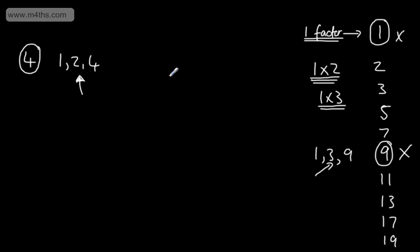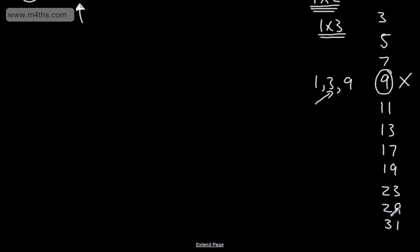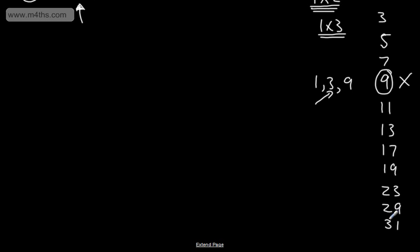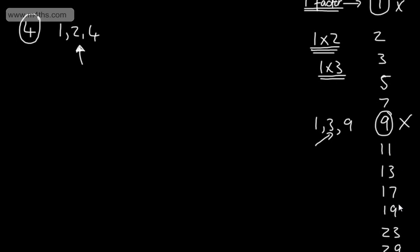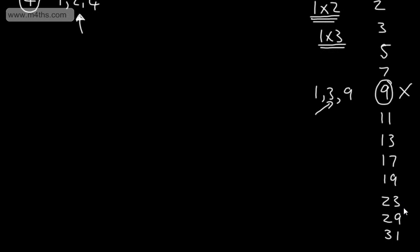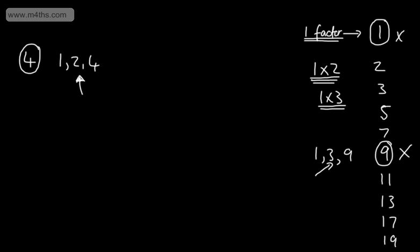So for your basic maths, just learn the first few prime numbers. I would suggest that any problem won't extend beyond about 31. Two is the first and only even prime number. Three, five, seven, 11, 13, 17, 19, 23, 29, 31 and so on and so forth.